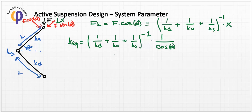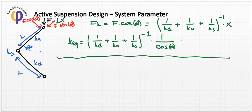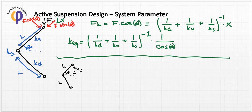We can calculate the cosine theta term using basic geometrical formulation. With the standard geometry having length l and displacement x_0, by trigonometry, sin(theta) equals (x_0 minus x) divided by l. If x increases, then sin(theta) becomes smaller.